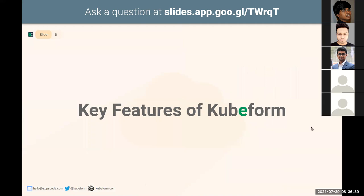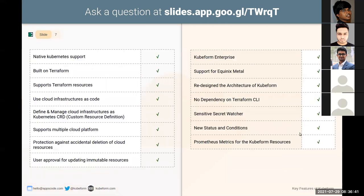The key features of Kubeform: it is a native Kubernetes tool built on Terraform and supports native Kubernetes. It supports Terraform resources, lets you use cloud infrastructure as code, and manages your infrastructure through a Kubernetes CRD. It also supports multiple cloud platforms.